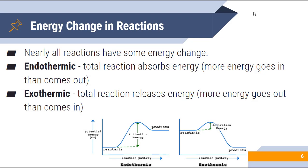When we talk about energy change in chemical reactions, nearly all reactions have some form of energy change. In an endothermic reaction, the total reaction absorbs more energy than goes out — more energy goes in than comes out. In an exothermic reaction, the total reaction releases energy, so more energy goes out than comes in. If the reaction is endothermic, the reactants have a lower amount of potential energy than the products. For the exothermic diagram, our products are lower than our reactants because more energy goes out than comes in.